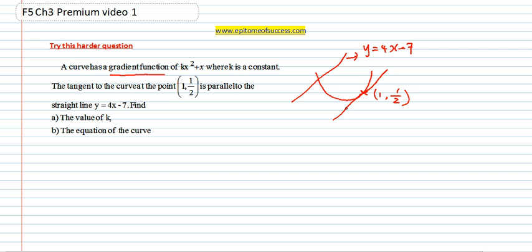So now when you see this picture, you can understand that the dy dx, which is the gradient function for the curve, is actually the gradient of the tangent. So the dy dx, which is kx squared plus x, is actually the gradient of the tangent at this particular point, which is also equal to the gradient of this line since they are parallel.